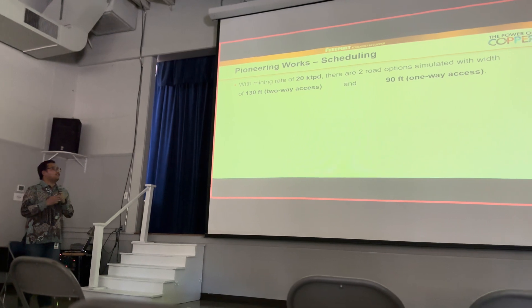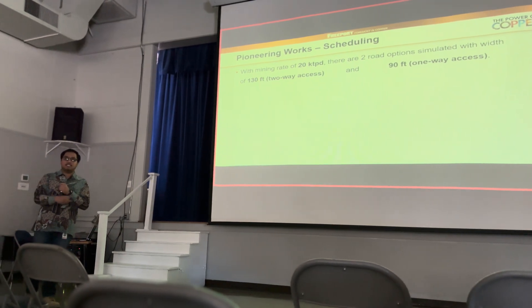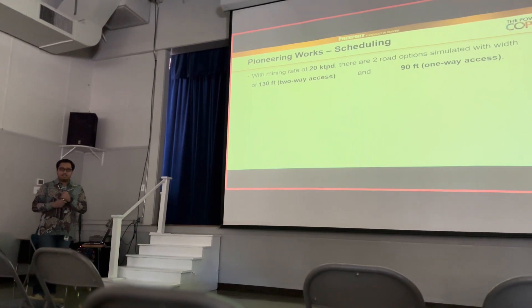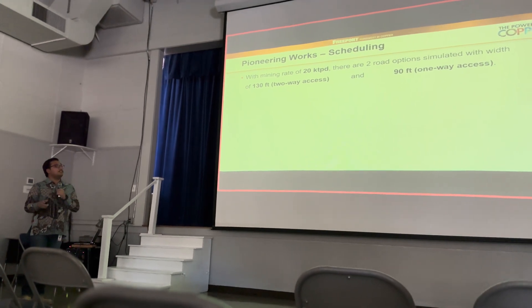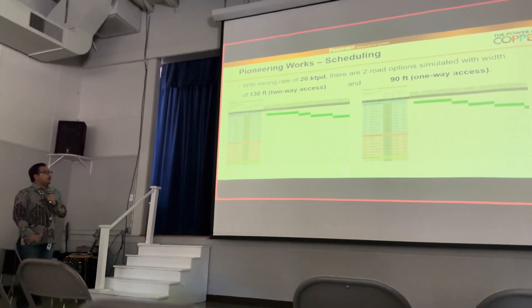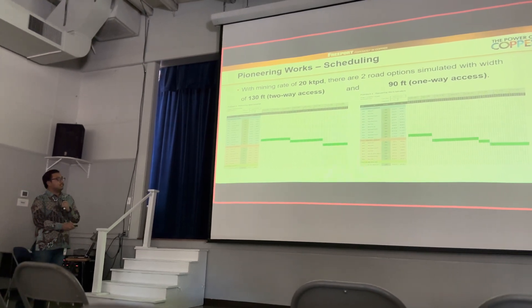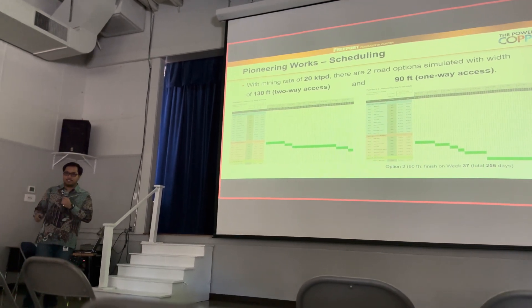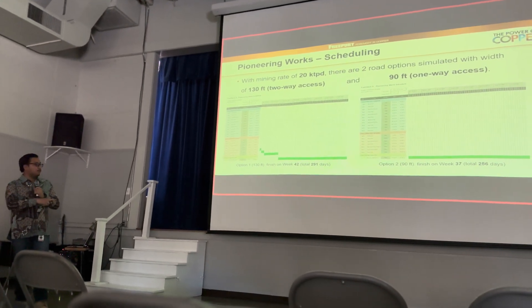After that, we want to create some sort of scheduling to tell you how long the project will take. We use a mining rate of 20K BCM per day, which is quite conservative. We provide two road design options: the first one is 130 feet wide, and the second one is 90 feet wide. Looking at the scheduling, the second option will finish on week 37, and the first option will finish 5 weeks later, on week 42.